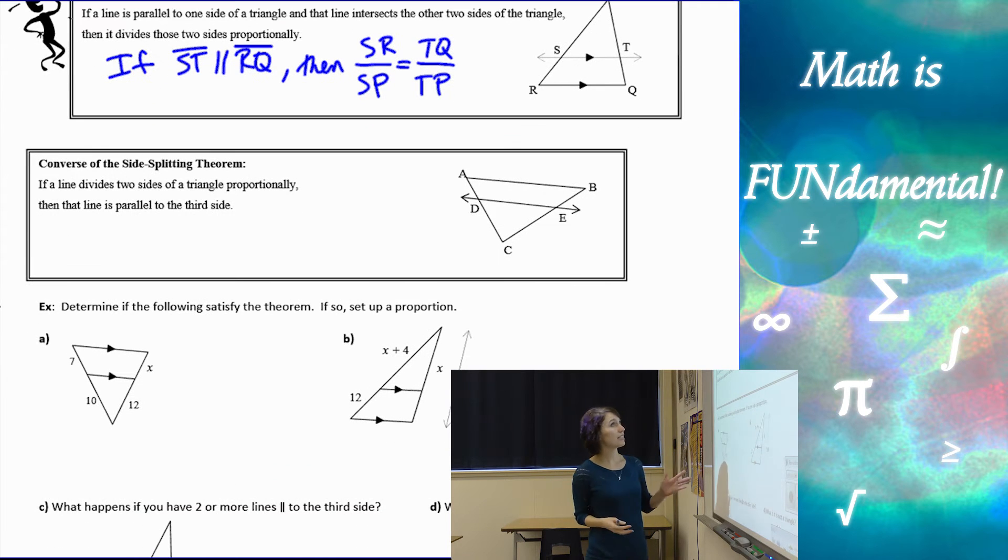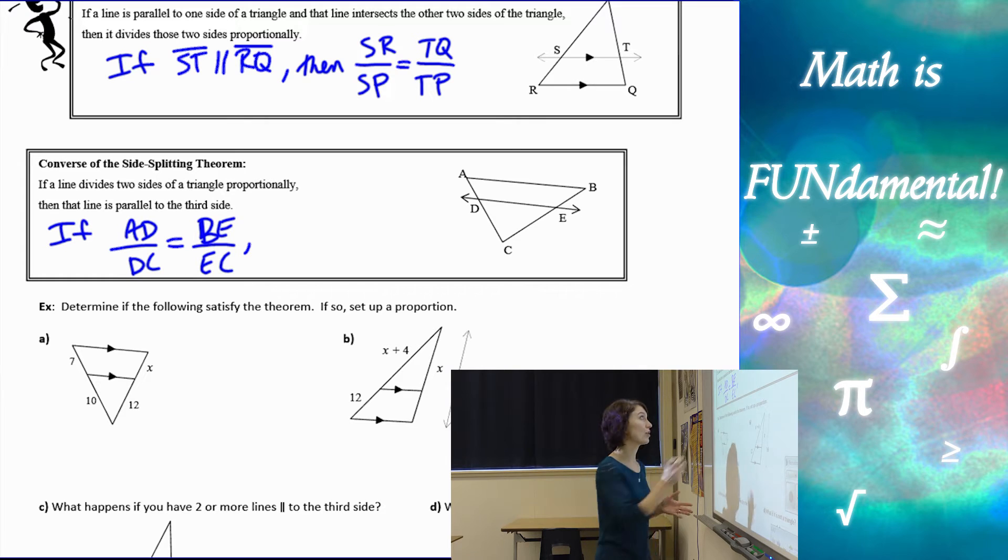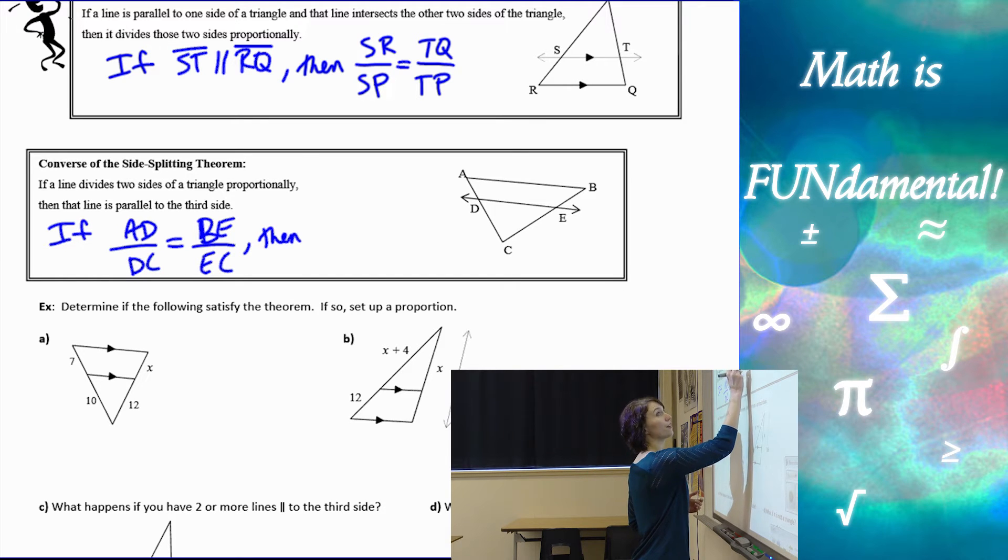The converse of that is just the opposite. If the line divides the two sides proportionally, then the line has to be parallel. So if we have AD over DC is equal to BE over EC, then we can conclude that DE has to be parallel to AB.